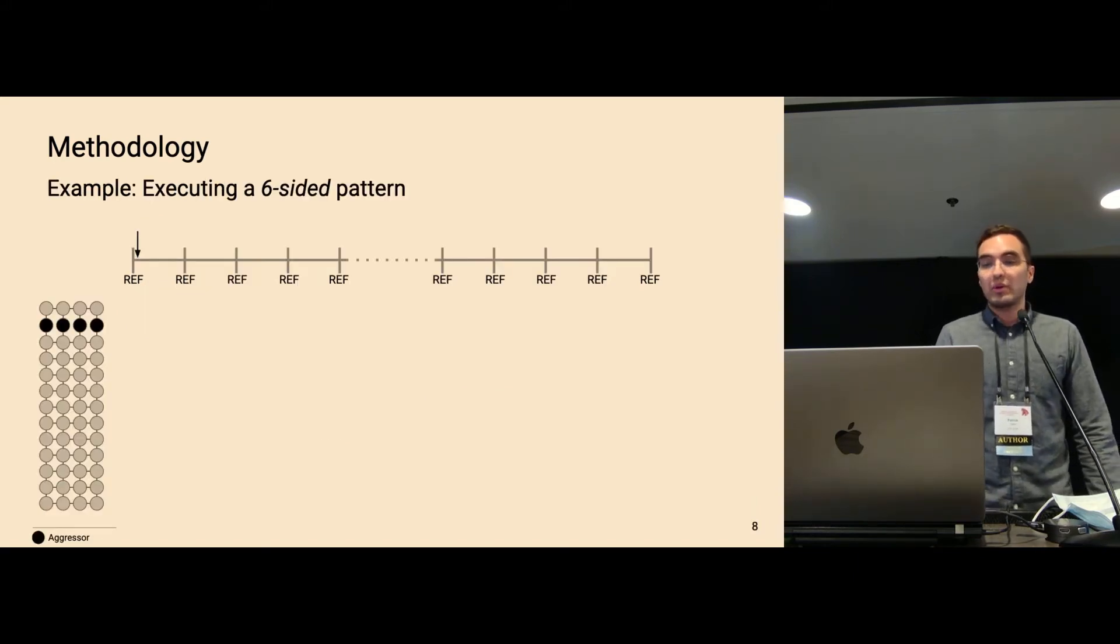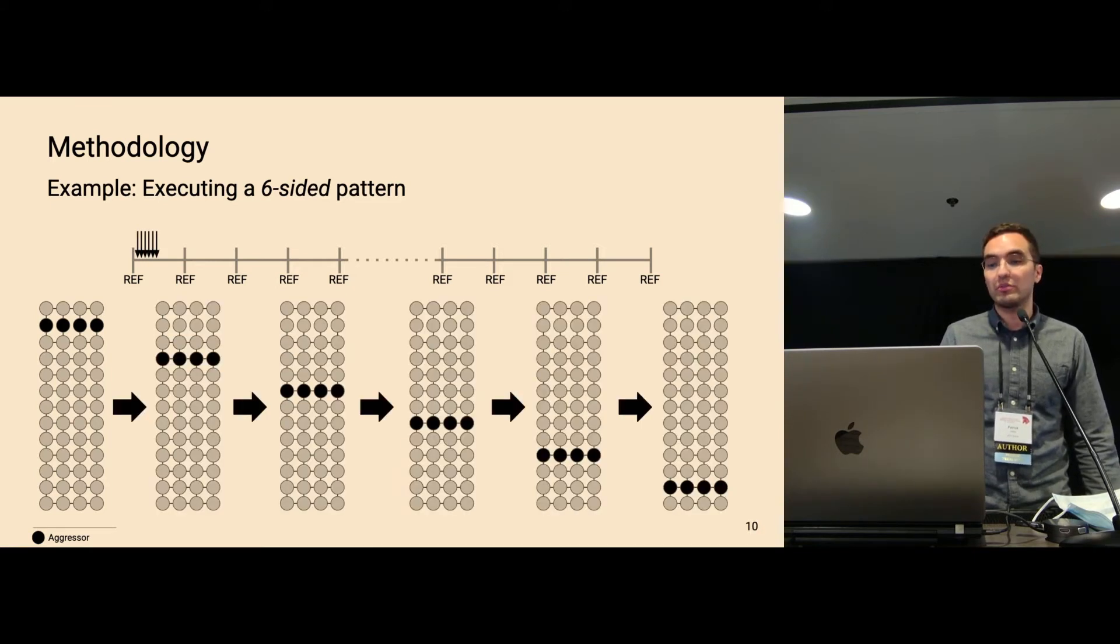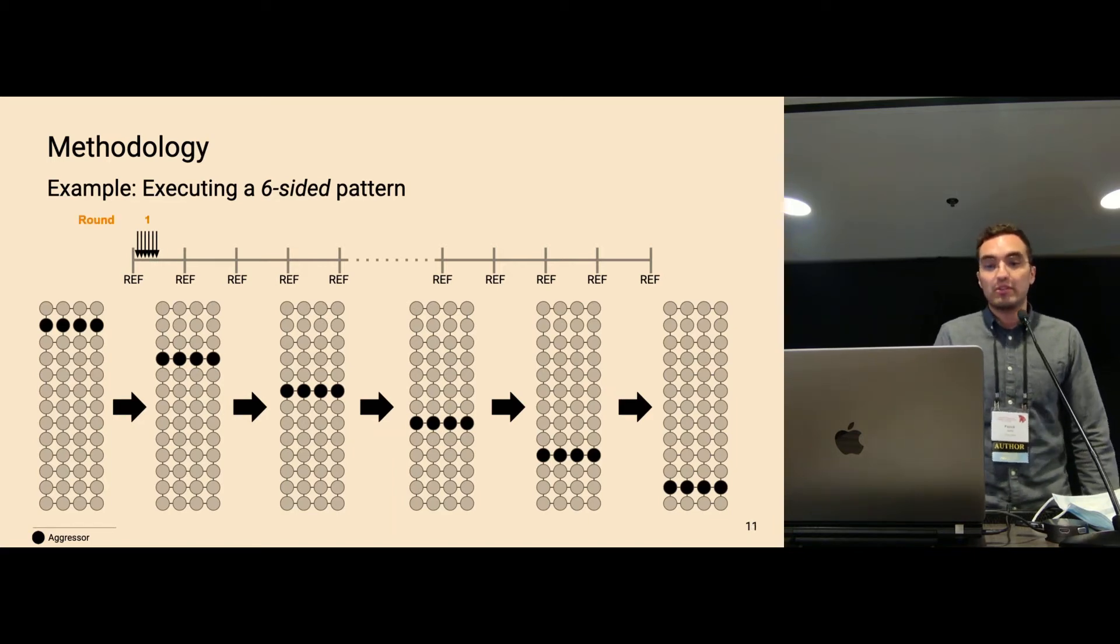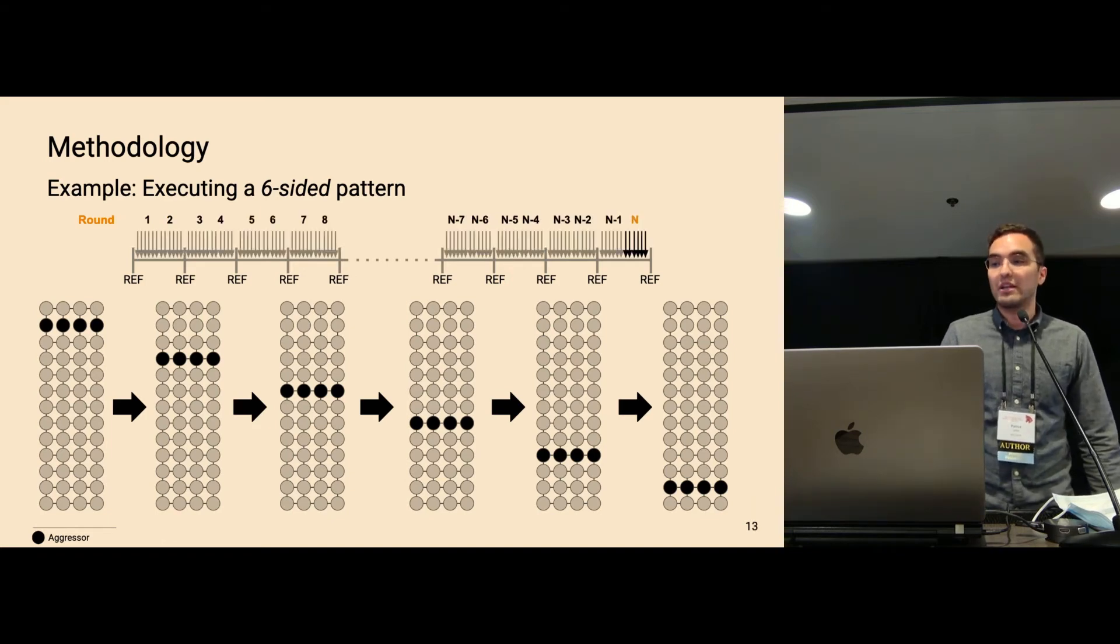And what existing patterns do, for example, six-sided patterns, is that they access the aggressors, for example, here, aggressor 1, aggressor 2, and so forth, up to aggressor 6. And then this builds the first round of pattern execution. And this thing gets repeated over and over again, for example, n rounds covering a whole refresh interval.